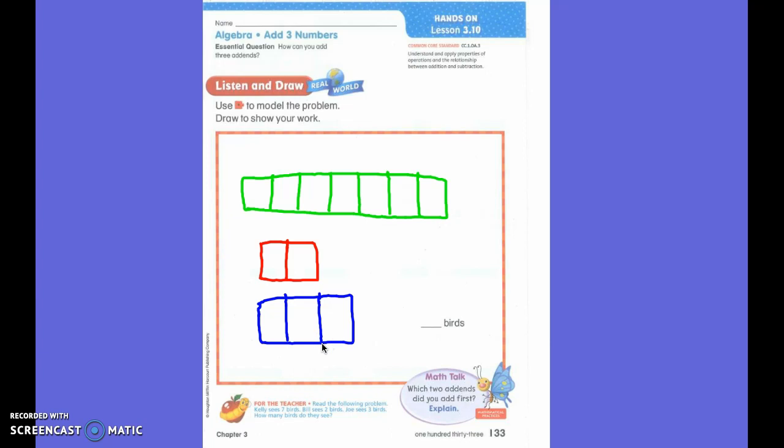Instead of having only two numbers to put together, we have three different numbers to put together. Raise your hand if you know how many birds they saw all together. Very good, they saw 12 birds all together.